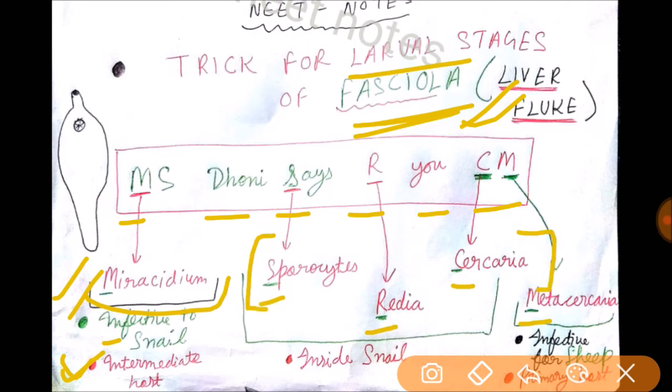The last one is Metacercaria. This is infective to sheep and is also called the primary host.